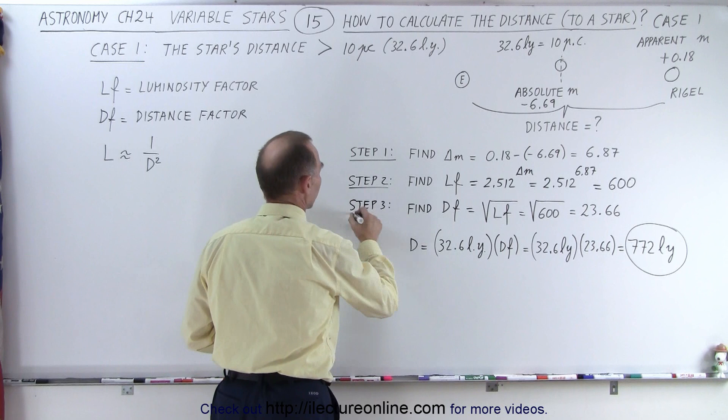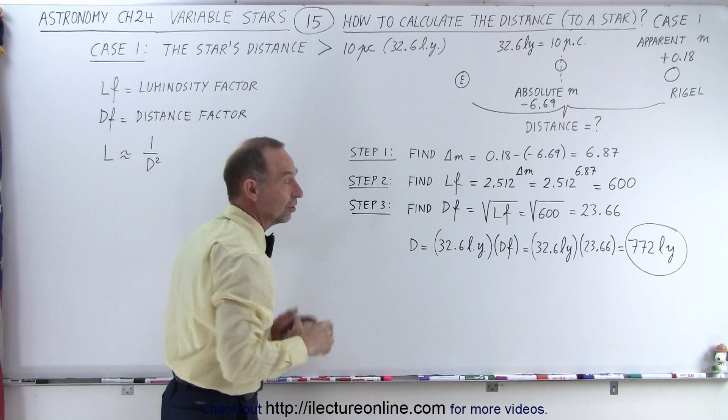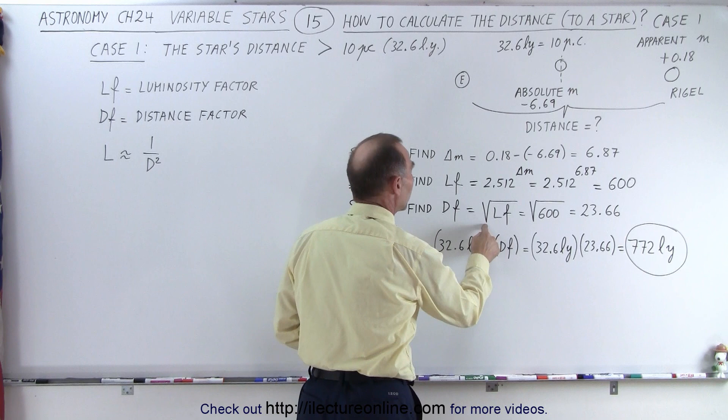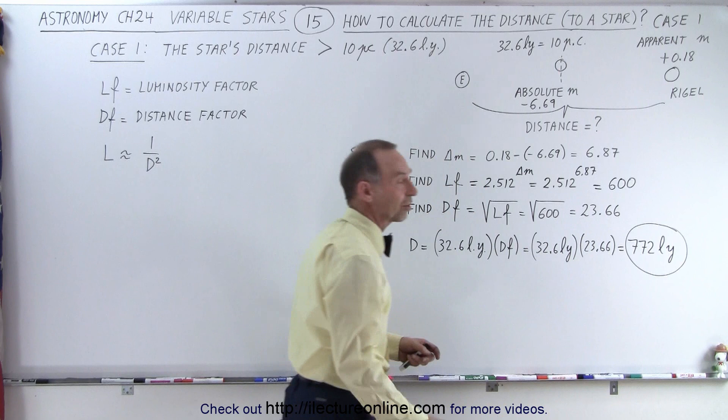Then we do step 3. In step 3, we find the DF, what we call the distance factor. The distance factor is the number we're going to multiply times 10 parsecs, or 32.6 light years, to get the actual distance. How do you find the distance factor? We take the square root of the luminosity factor. So in this case, the square root of 600 gives us 23.66.